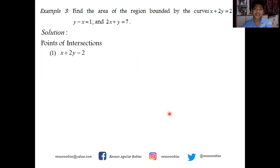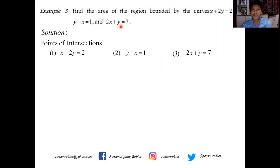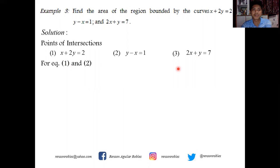For this particular problem, we start by getting the points of intersection. I'll label x plus 2y equals 2 as equation 1, y minus x equals 1 as equation 2, and 2x plus y equals 7 as equation 3. This system of linear equations can be solved by substitution, simultaneous equation, elimination, or any algebraic process. This time, I'll be using elimination.